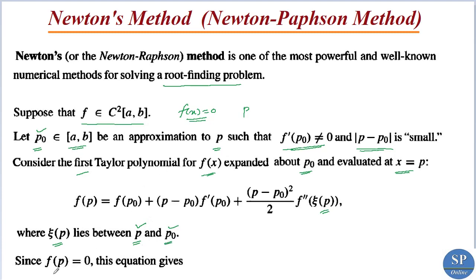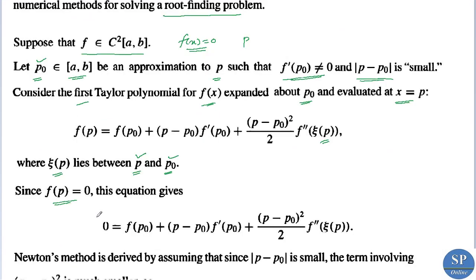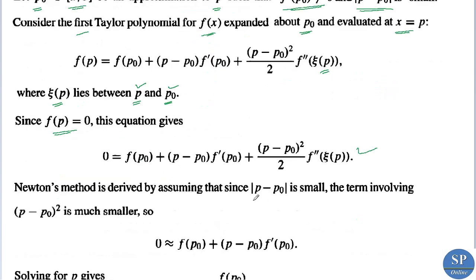We assumed that |p - p₀| is small, and since p is a root we have f(p) = 0. So this equation becomes: 0 = f(p₀) + (p - p₀)·f'(p₀) + [(p - p₀)² / 2!]·f''(ζ(p)). Since |p - p₀| is small, the term containing (p - p₀)² is much smaller, so we can ignore it. Thus, f(p₀) + (p - p₀)·f'(p₀) ≈ 0.